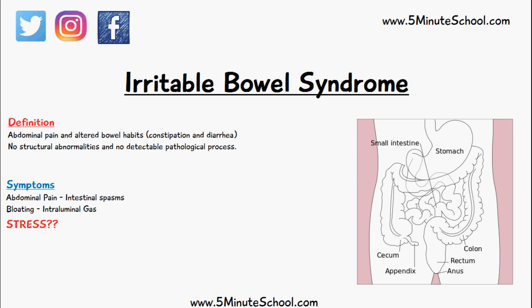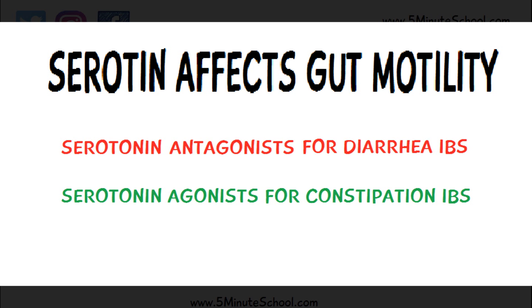Other treatments include fiber supplementation and medications that affect serotonin. Since serotonin affects gut motility, either serotonin agonists or antagonists can be used. People with diarrhea-predominant IBS should be given serotonin antagonists, while those with constipation-predominant IBS should be given serotonin agonists.